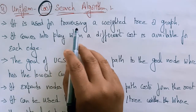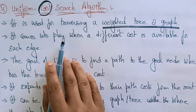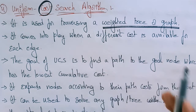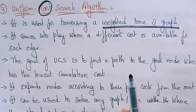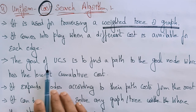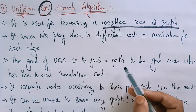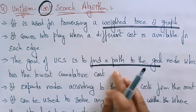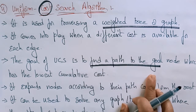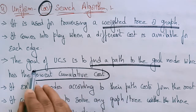Uniform Cost Search is best used for traversing a weighted tree or graph. It comes into play when a different cost is available for each edge. The goal of Uniform Cost Search is to find a path to the goal node which has the lowest cumulative cost.